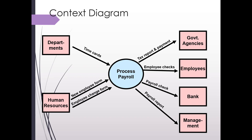Just to note, in some textbooks you would see this labeled zero or 0.0, so there are some small differences between textbooks. We have two data sources on the left: you can see 'Departments' — the individual departments are sending in time cards — and the Human Resources department is sending in new employee information, such as employee change forms for things like changes in withholding or changes in pay rates.